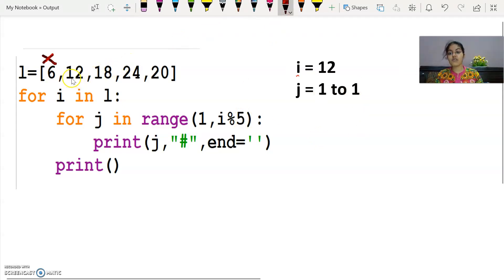So when my i's value is 12, at that time print j. What value of j got printed? 1. Now there's a comma, so with a space what will be printed? Hash. Okay? What will this end argument do? If I have to print any next value, it will print here. Now what is there? Print function. That means my cursor will move to the next line.